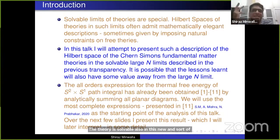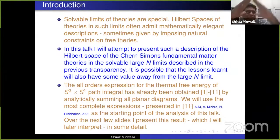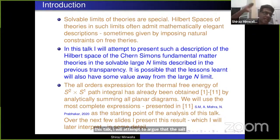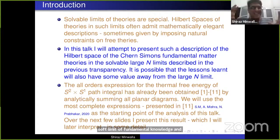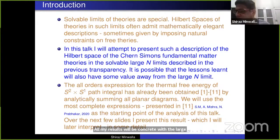Solvable limits of theories are special. The Hilbert spaces of such theories often exhibit great mathematical elegance, and are sometimes obtained from simple deformations or constraints of free theories. In this talk, I will attempt to argue that this large N 't Hooft limit of fundamental matter Chern-Simons theories has an elegant Hilbert space structure. All my results will be concrete in the large N context, but as I will argue at the end of the talk, some of them may generalize beyond large N.